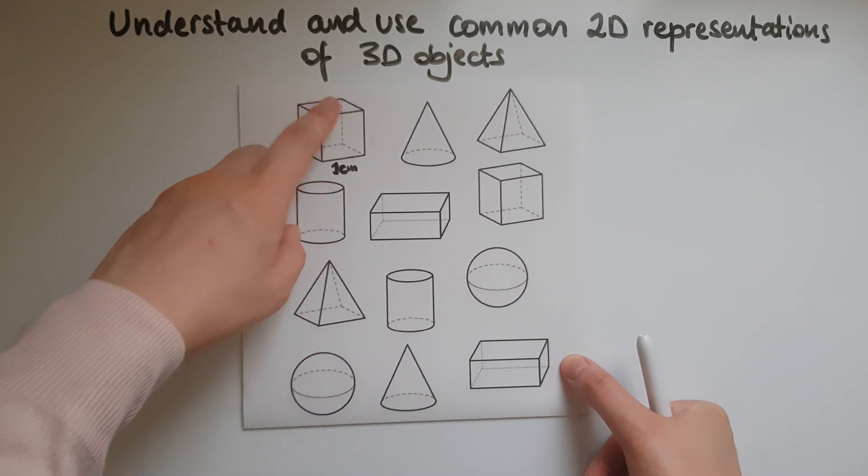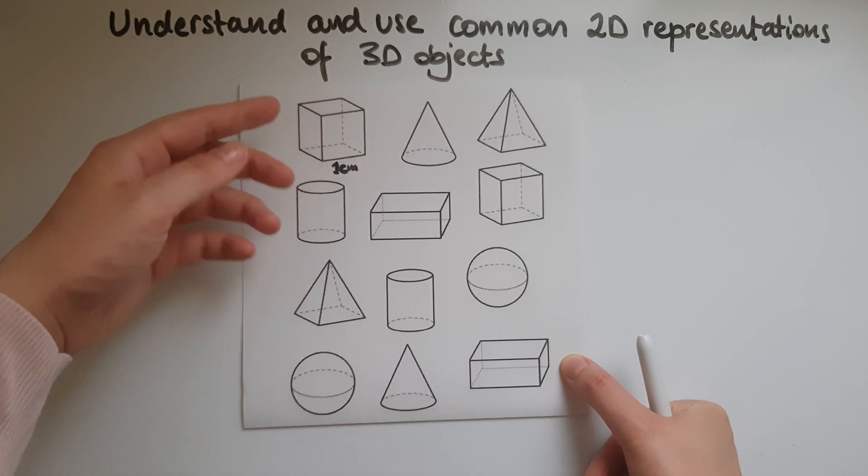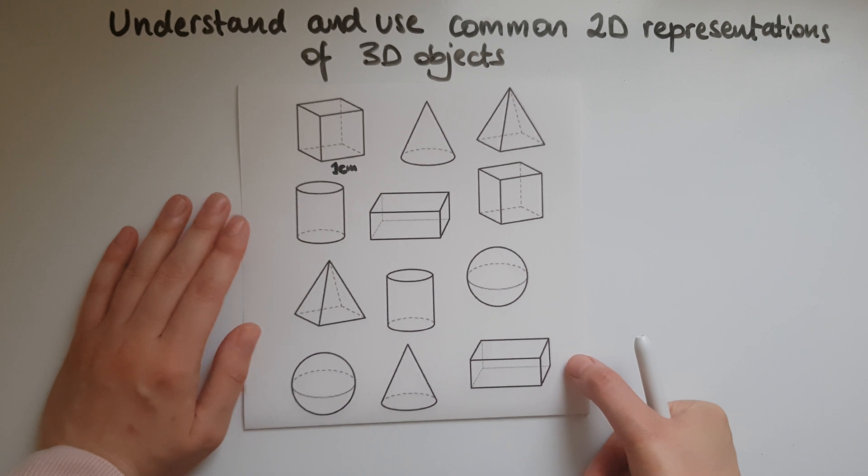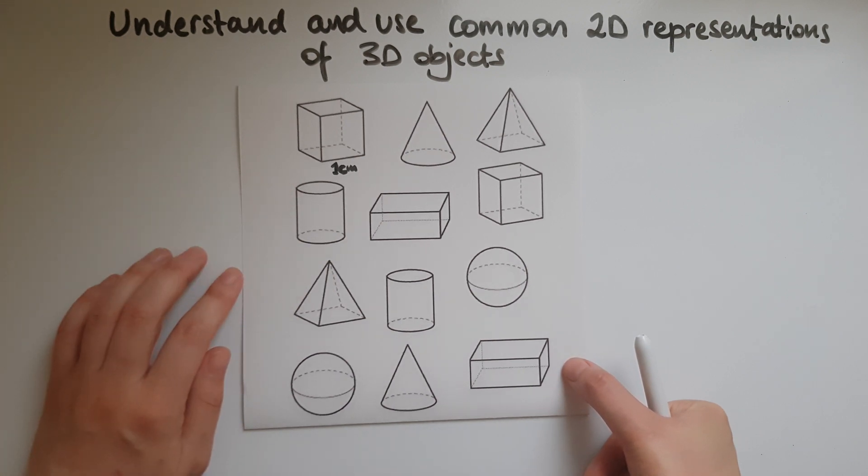And this one centimetre and so on, because this is a cube. So we can deduce the volume through this, which has got to be one centimetre cubed.